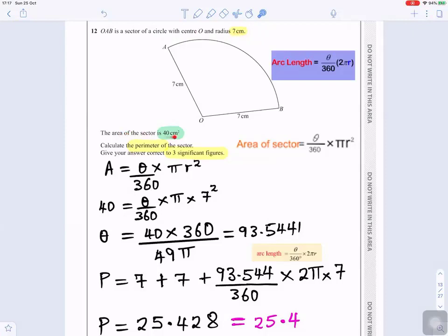The area of the sector is 40 centimeters squared. Calculate the perimeter of the sector.